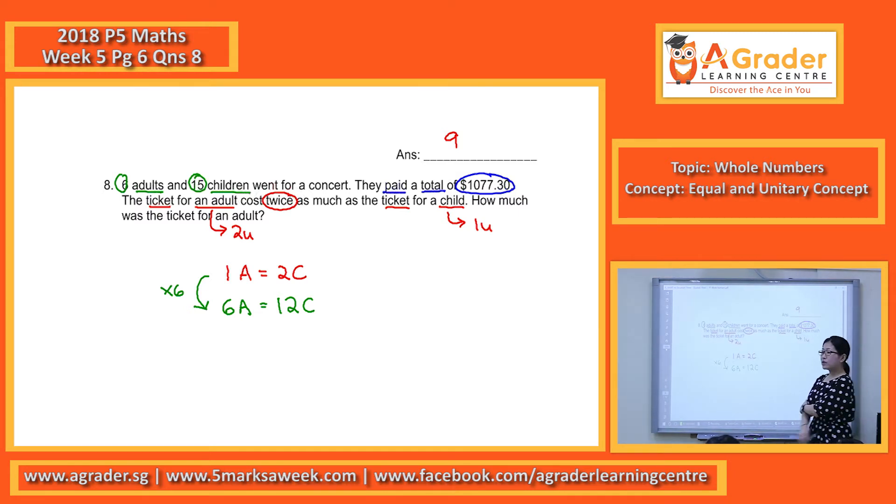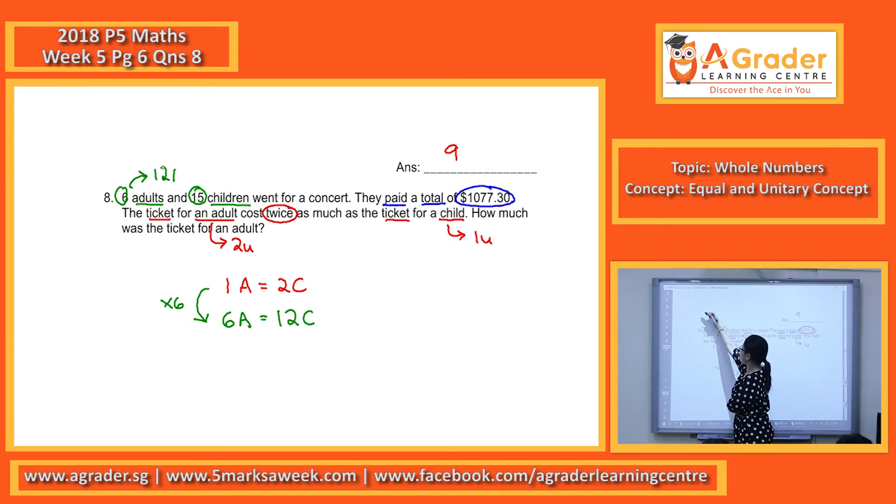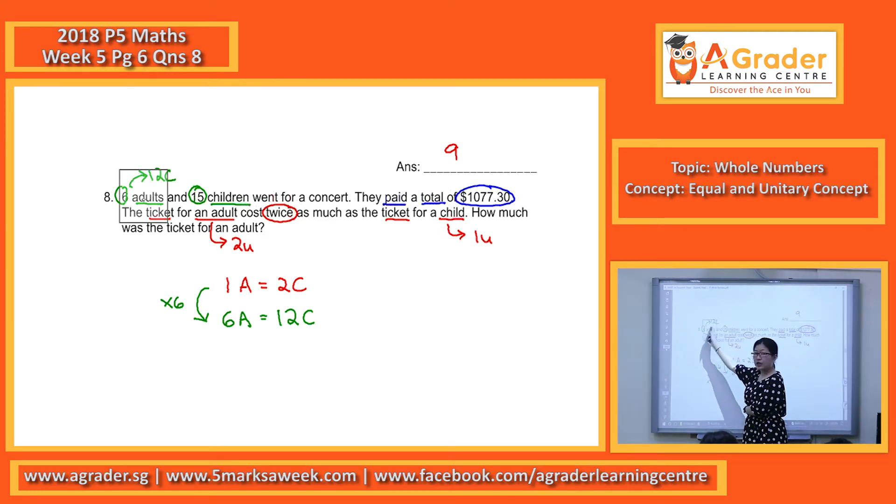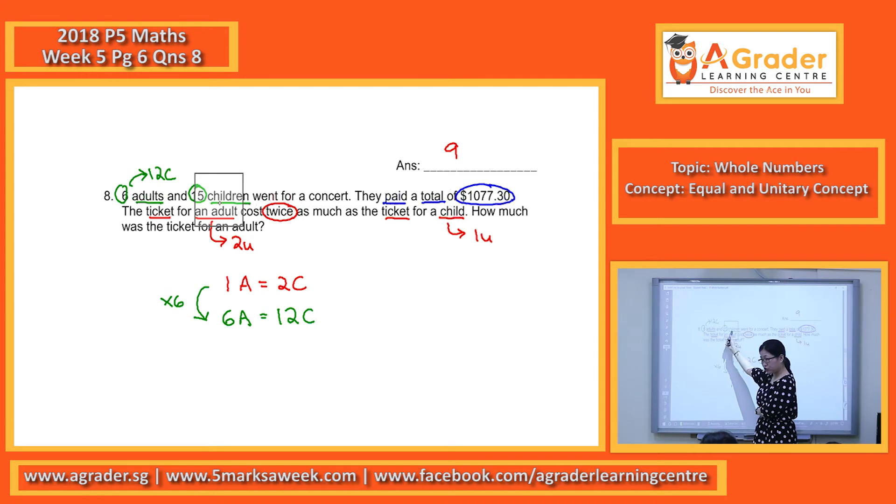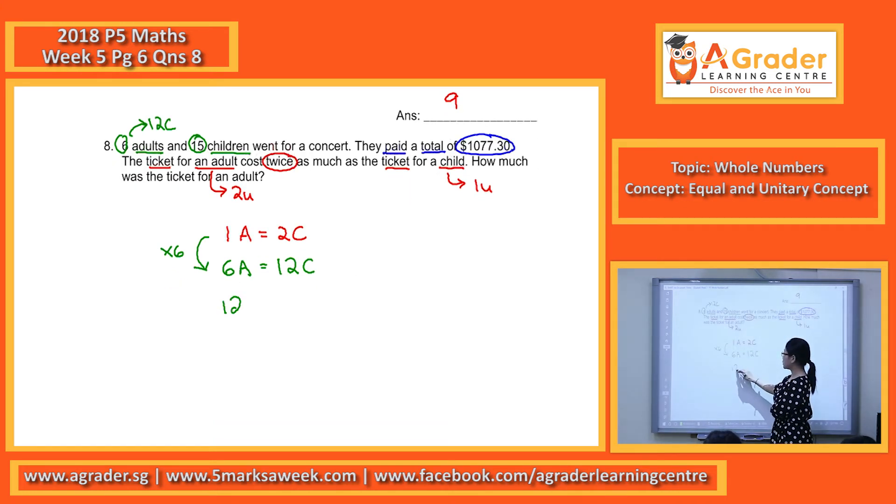So when we make this to become 12 children, right? Now, this type over here, take note, it will represent 12 children as well. So if here I have 12 children, and here I have 15 children, what is the total number of children? Okay, 27 children tickets.